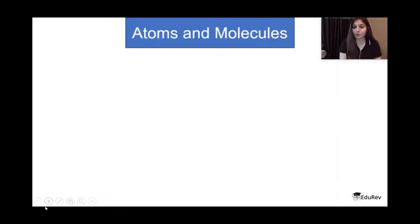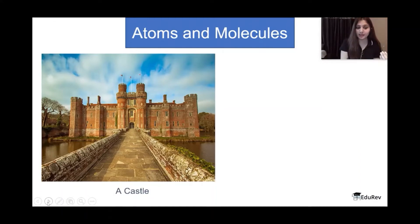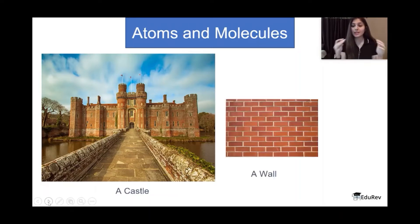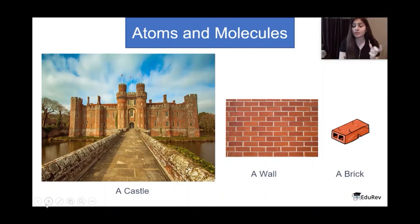Moving on, we have atoms and molecules. What are these and how do we tell them apart? What you see on your screen right now is a picture of a beautiful castle. Now if I want to break the castle — don't ask me why — I will see that the castle is actually made up of an amalgamation of different walls combined together. If I also try to break a wall, I will see that the wall is actually made up of a number of bricks combined together.